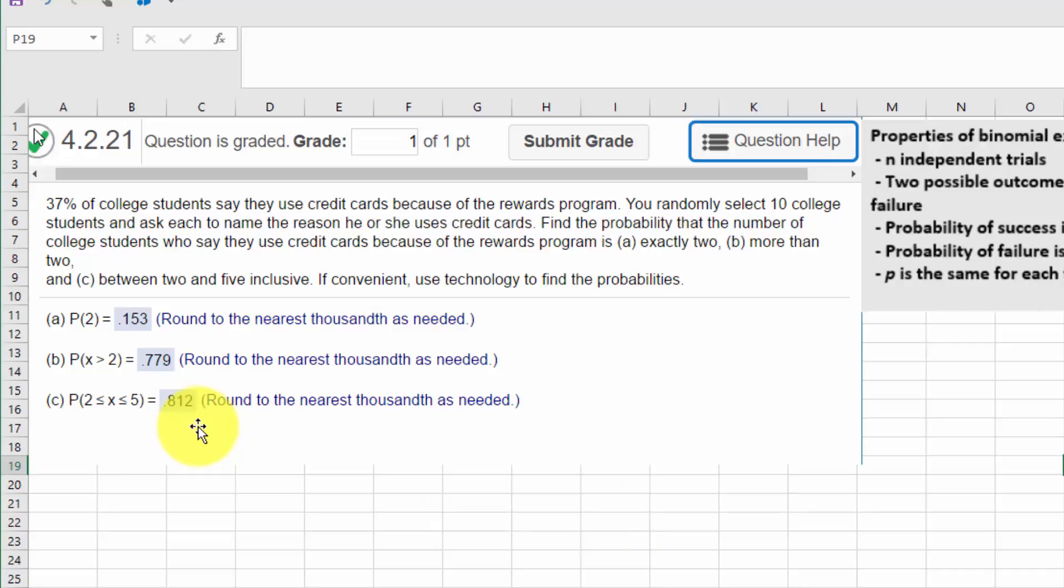So that's how you can do it pretty quickly using StatCrunch... I'm sorry, PHStat add-in in Excel.